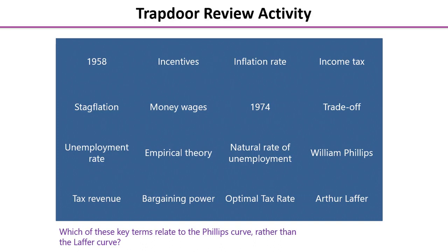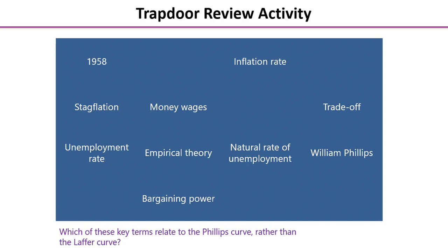Let's do a review activity. On the screen are 16 key terms or phrases. Your task is to decide which of those key terms relate to the Phillips Curve rather than the Laffer Curve, which we looked at in a previous video. Take two or three minutes to read through the key terms and note down the ones that relate to the Phillips Curve. Once you've checked your answers, as an additional activity, see if you can remember which terms were removed and therefore relate to the Laffer Curve.